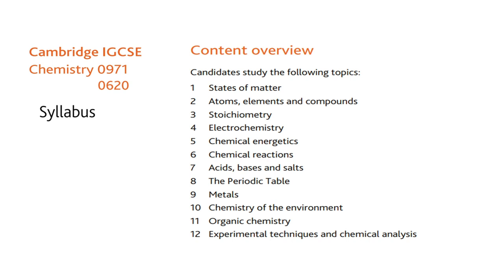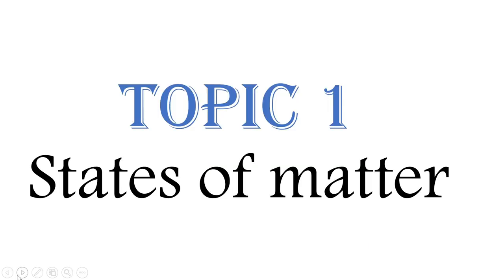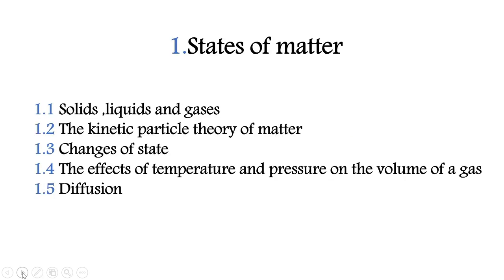Today we are going to start the Cambridge Chemistry 0971 or 0620 syllabus. The content overview has 12 topics. Topic number one is states of matter. The subtopics for states of matter are: solids, liquids and gases; the kinetic particle theory of matter; changes of state; the effects of temperature and pressure on the volume of a gas; and diffusion.